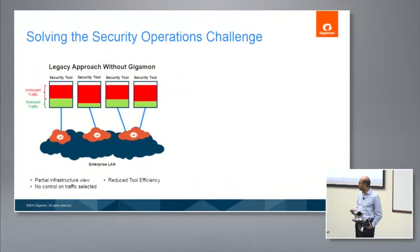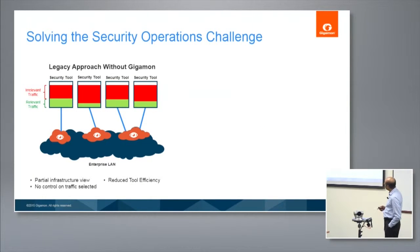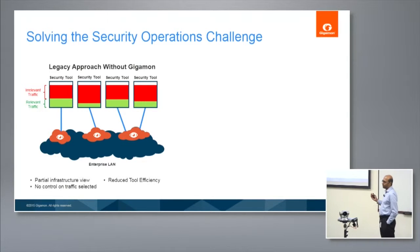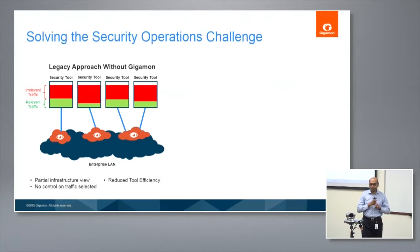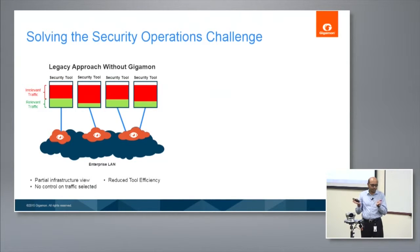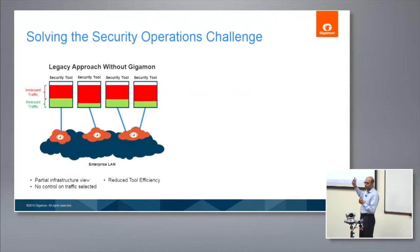A good way to summarize this — the contrast is what's most important here. If you look at the legacy approach, you take a span port, send the traffic to a specific security tool. Two things happen: number one, you're getting a very partial view of the infrastructure — you're just getting insight into what's happening on that specific link.